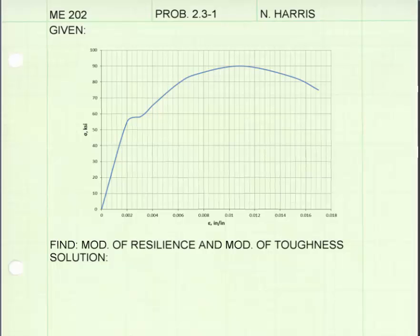The modulus of resilience is equal to the area under the stress-strain curve up to the point of the proportional limit, which is approximately right here. The modulus of resilience is the area under the stress-strain curve from a stress and strain of zero up to the proportional limit.